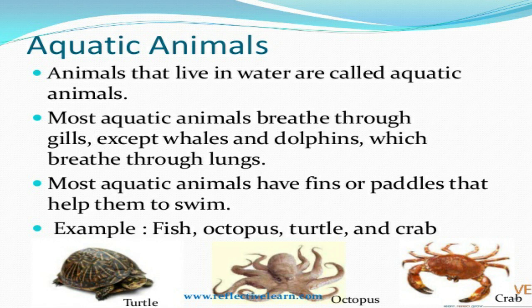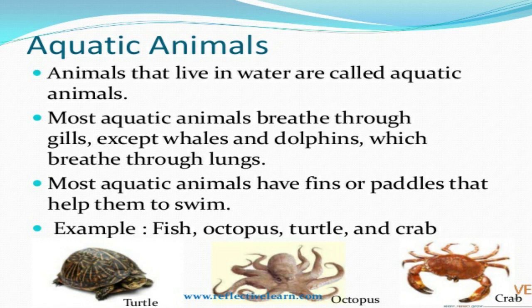Now let's see the adaptations of aquatic animals. Most of the aquatic animals have a special streamlined shape that helps them to swim. Fishes have fins, turtles have flippers, and swans have webbed feet which help them to move in water. Most aquatic animals like fishes and crabs breathe through gills. But whales and dolphins have lungs in the body and they breathe through those lungs.